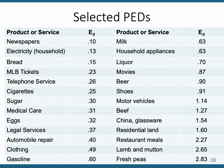Moving into the second column: beer is close to unit elasticity, which surprises me — maybe because if the price changes enough, people switch to wine or another alcoholic product. More elastic products: beef is elastic because you could substitute pork or chicken. Restaurant meals are a luxury item. Lamb and mutton are probably a luxury item with other substitutes.